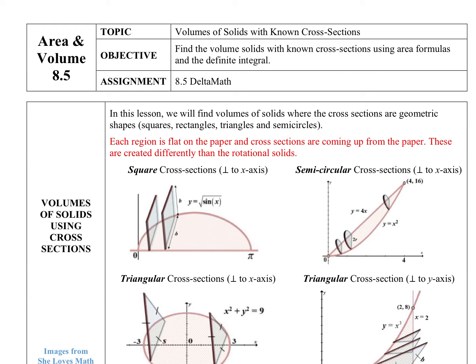For these solids, we're given a bounded region. For this first example, y equals the square root of sine x, and that becomes the base of my solid. So imagine this lying flat on the paper. I'll be given a shape of the cross sections: squares, rectangles, triangles, and semicircles are popular ones. And what we have for this first one is we've got these squares rising up out of the paper, rising perpendicularly up out of the paper and creating that solid.